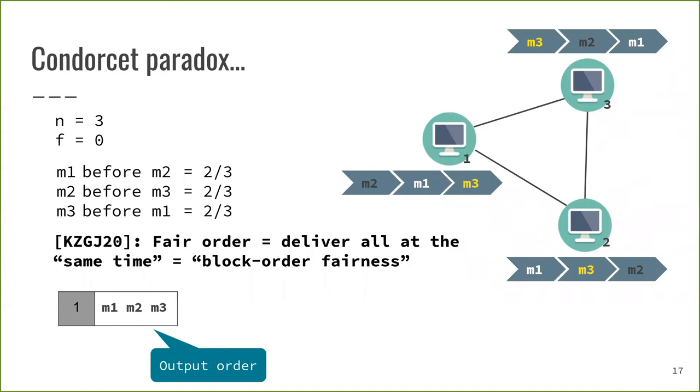A solution to this problem has been formulated in 2020 by Kelkar, Sang, Goldfeder and Juels. This solution allows the output of multiple messages together as a set or a batch and is defined as block order fairness. This solution is one aspect that inspired our work and our notion of fair order.